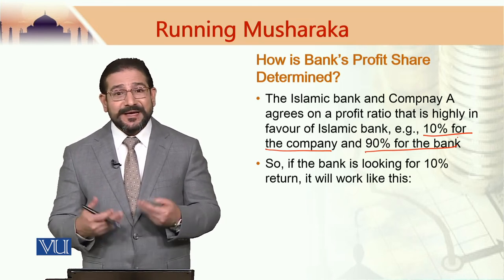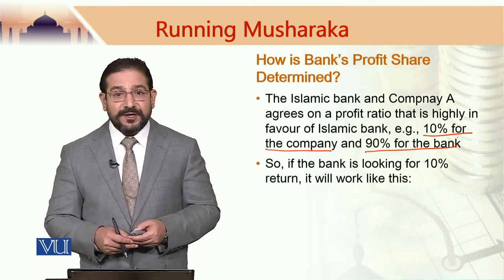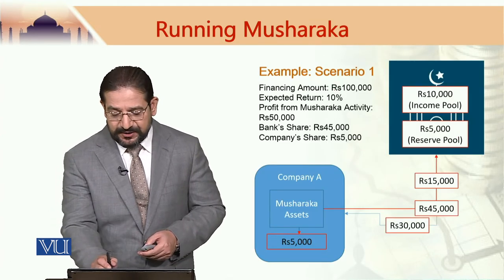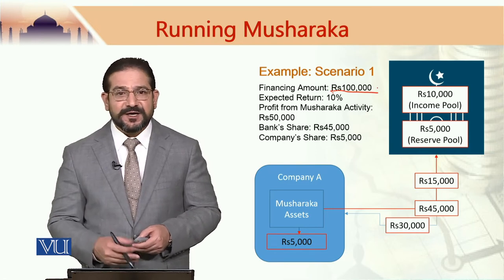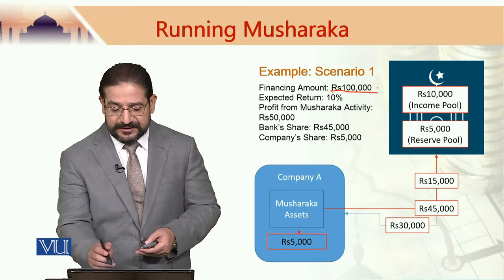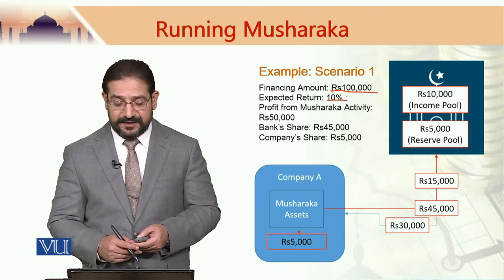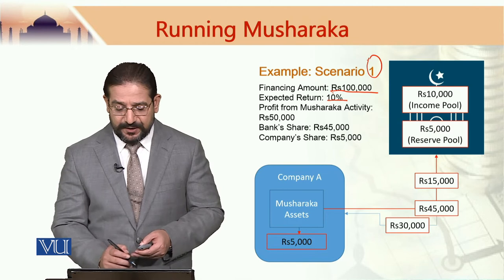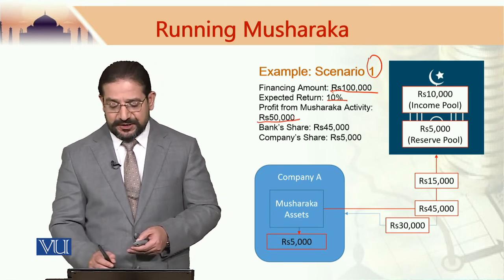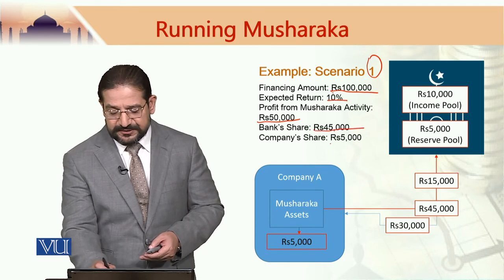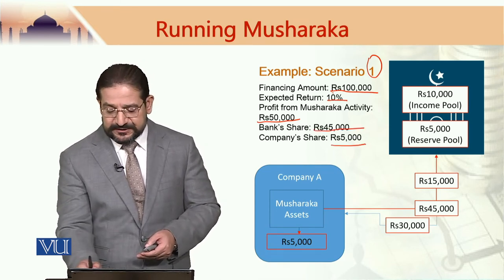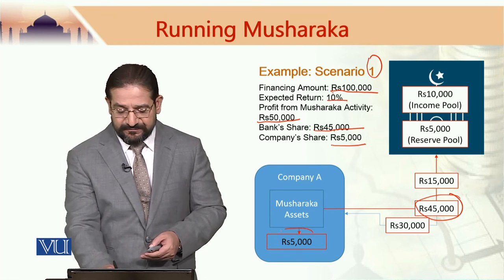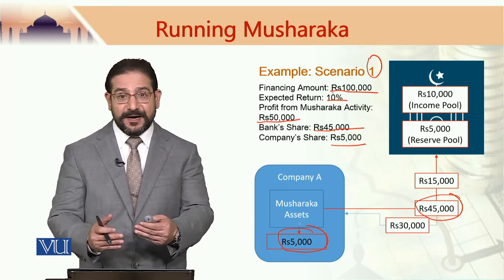If the bank is looking for a 10 percent return, it will work as follows. In Example 1, the financing amount is 100,000 rupees and the expected return to be generated by the bank is 10 percent. If the profit from the Musharraka activity in this scenario is 50,000, the bank's share would be 45,000 and the company's share would be 5,000. This 45,000 would go to the bank and the company would retain 5,000 profit.